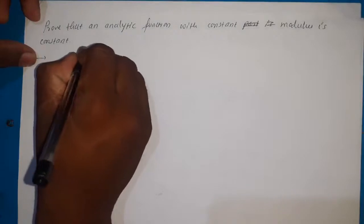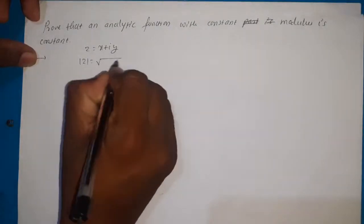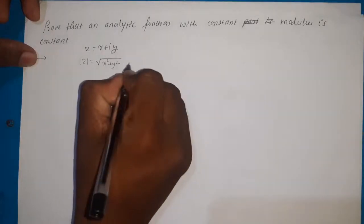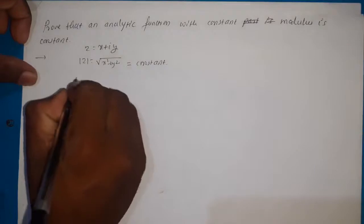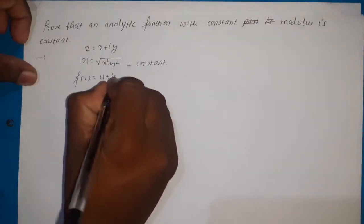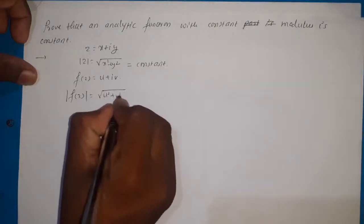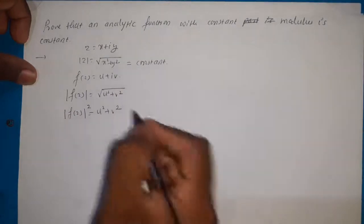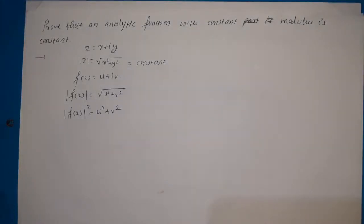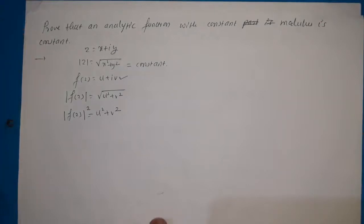Suppose z = x + iy is a complex variable, then modulus of z is given by square root of x² + y². It is given that this modulus is constant according to this problem. Now f(z) = u + iv, and modulus of f(z) is square root of u² + v², and its square is |f(z)|² = u² + v². We need to show that f(z) = u + iv is constant.